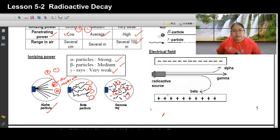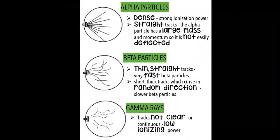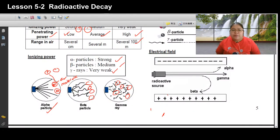Looking at the diagram: alpha has a dense, straight track — strongest ionization. The alpha particle has larger mass and momentum and is not easily deflected, so it easily hits air molecules. Beta has a thin, slightly curved track — it is fast but bends, giving medium ionization. Gamma's track is unclear or discontinuous — it has low ionization power. These are the ionization characteristics of the three types of radiation.